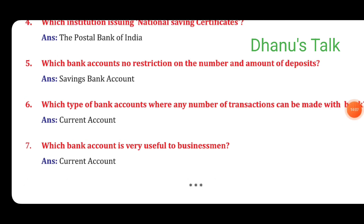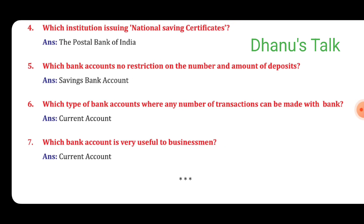Question No. 5: Which bank account has no restriction on the number and amount of deposits? Answer: Savings bank account. Question No. 6: Which type of bank account allows any number of transactions to be made with the bank? Answer: Current account. Seventh question: Which bank account is very useful to businessmen? Answer: Current account.